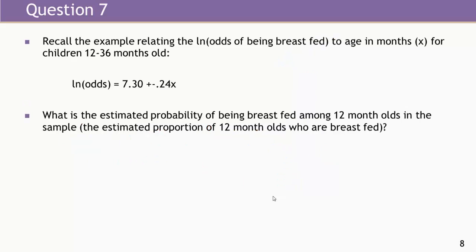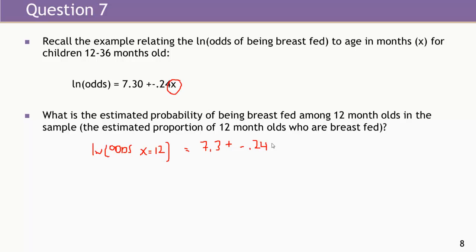Now let's look at the example from the lecture relating the log odds of being breastfed to age in months for a sample of Nepali children aged 12 to 36 months. The model is: log odds of being breastfed equals 7.3 plus negative 0.24 times age in months. Let's estimate the probability of being breastfed among 12-month-olds. We start on the log odds scale: the log odds when x equals 12 is 7.3 plus negative 0.24 times 12, which equals 4.42.